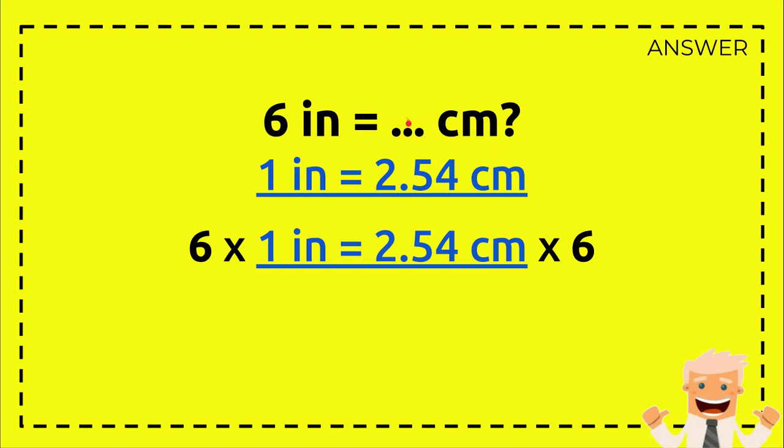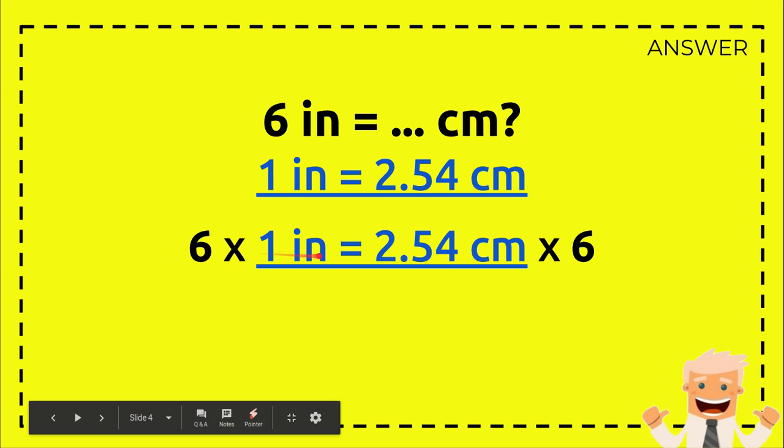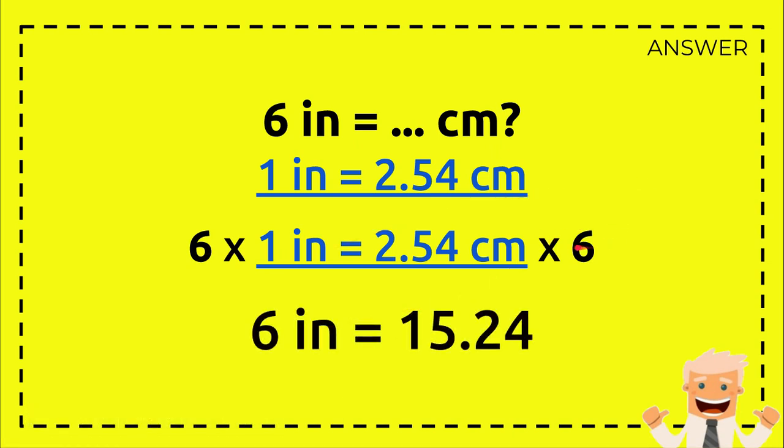And another 6 in the right side of the equal sign. So when you have 6 on the left, you must have 6 on the right as well. Alright, so 6 times 1 equals 6 inch, and 6 times 2.54 centimeters equals...